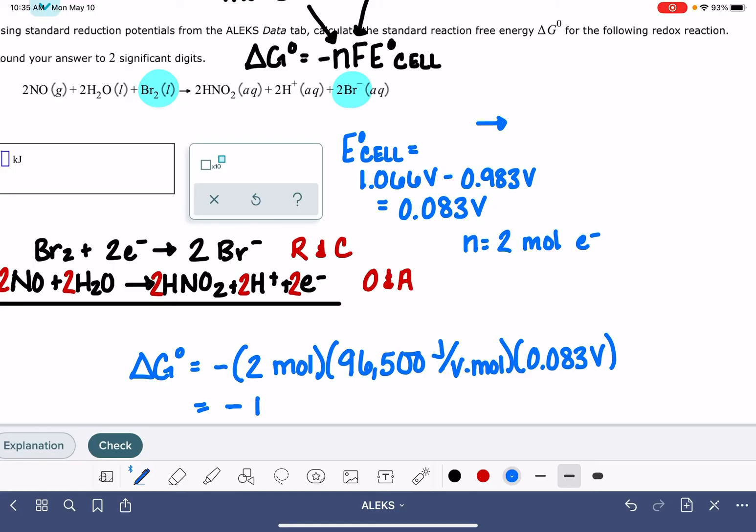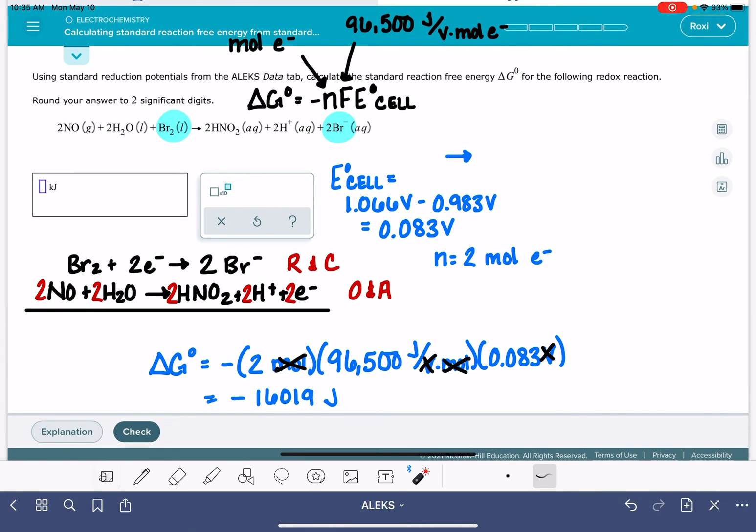Negative two times 96,500 times 0.083. And this gives me a negative 16,019. Notice that the volts cancel, the moles cancel, and we're left with units of joules. Delta G is typically expressed in kilojoules. And if you look here in our answer box, ALEKS wants us to enter this into the box in the units of kilojoules. So to do that, we're just going to divide by 1,000, negative 16.019 kilojoules. And it looks like we want to give our answer to two significant figures, so that's going to be negative 16.